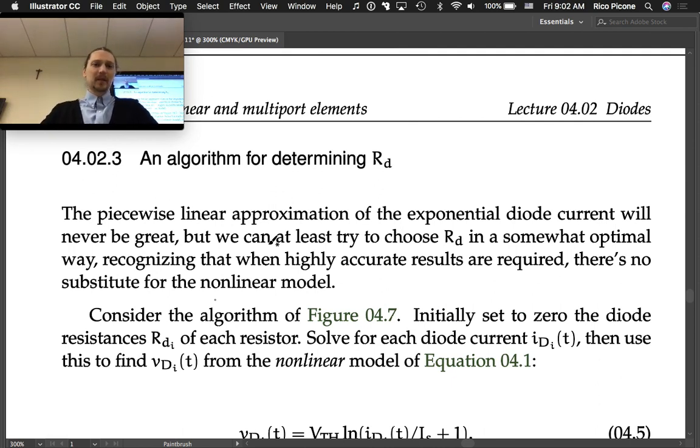The piecewise linear approximation of the exponential diode current will never be great, but we can at least try to choose RD in a somewhat optimal way, recognizing that when highly accurate results are required, there's no substitute for the nonlinear model.